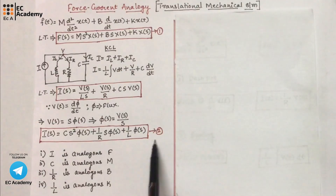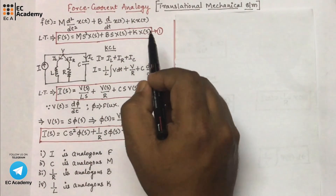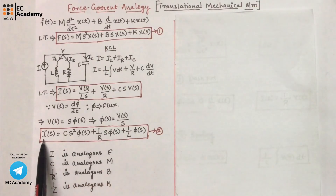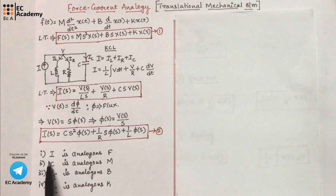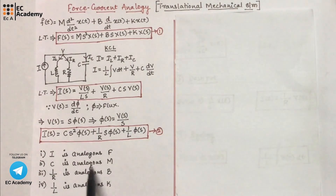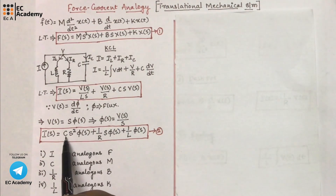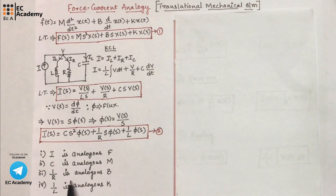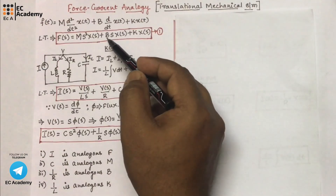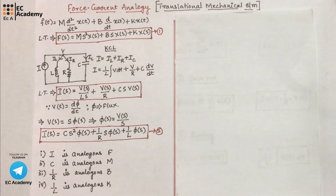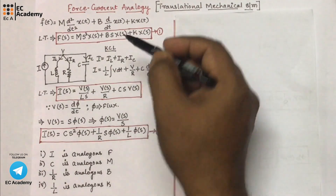Let us consider this as equation number 2. Comparing equation 2 with equation 1, we can say: current I is analogous to force F; capacitor C is analogous to mass M; reciprocal of resistor (1/R) is analogous to dashpot B; and reciprocal of inductor (1/L) is analogous to spring K.